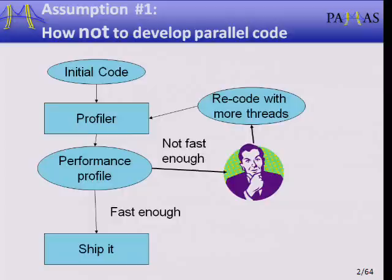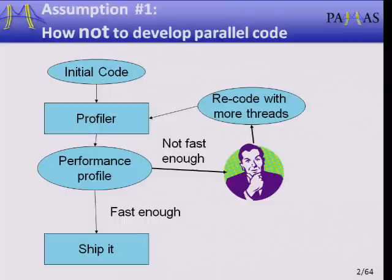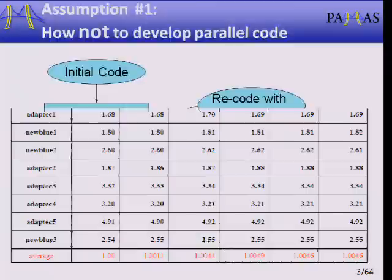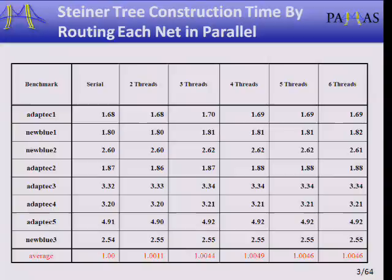How many of you have ever tried something like this approach? What I've seen around the industry is lots of failures. Oftentimes you'll see that the end processors are actually running the code slower than one. Here is a real example done by one of my graduate students where his final six-thread version was not a lot slower than his single-thread version, but it was slower.